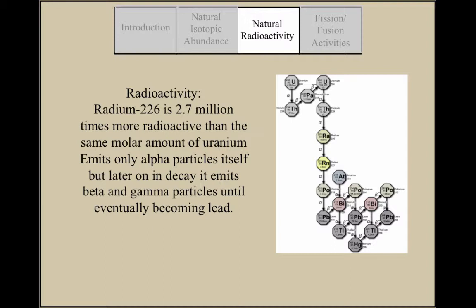Radium-226 is a byproduct in the natural decay of uranium and loses about 1% of its activity in 25 years. Eventually, it will reach its final product of lead-206. In general, radium samples will emit only alpha particles, but later on in its decay, it emits beta and gamma particles.